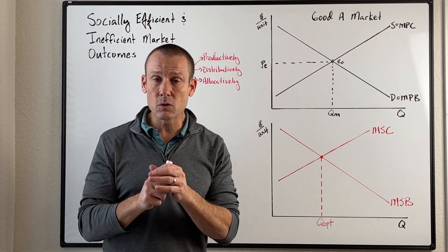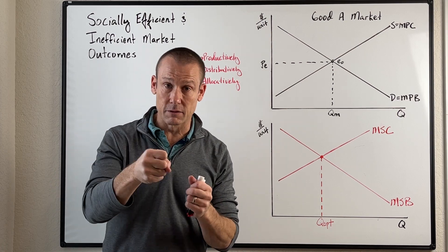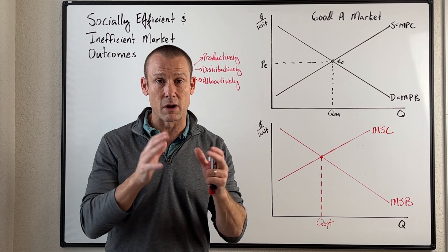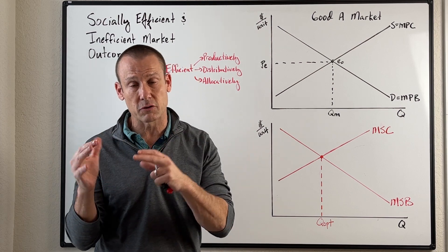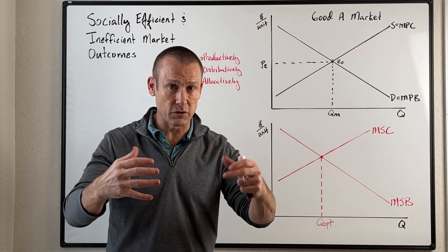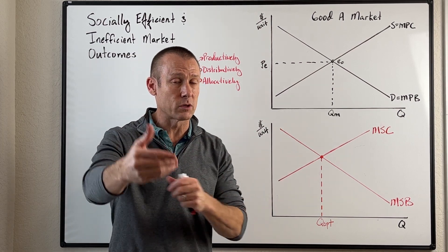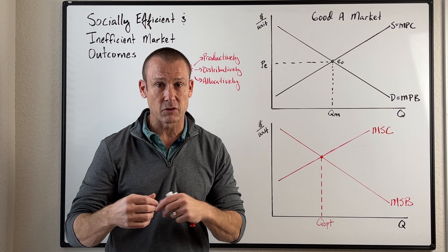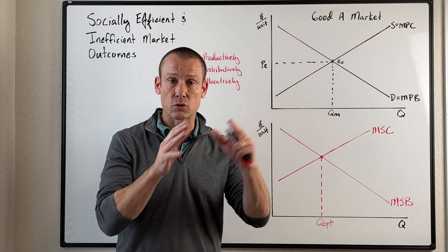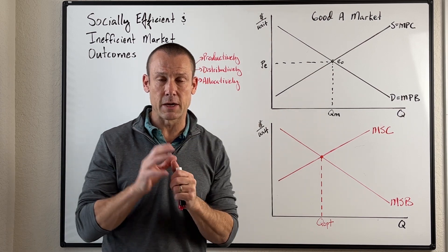What we can do is intervene in markets with government to help push markets closer to what we call social efficiency — that is, maximize social surplus.